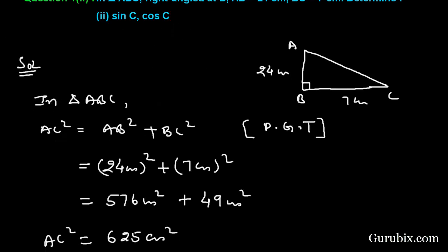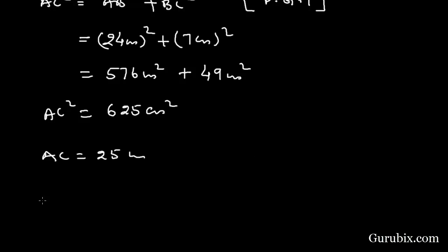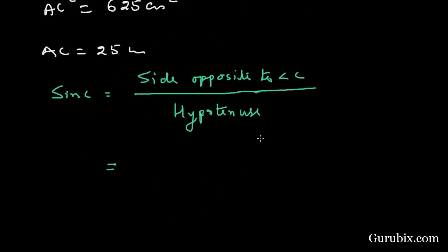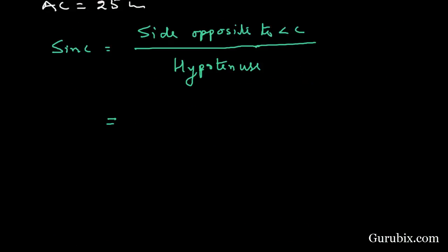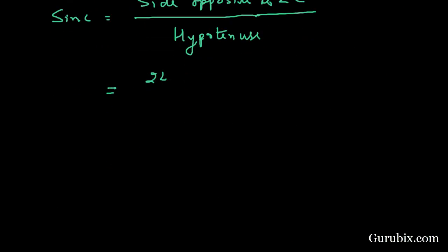Now we shall calculate sin C. It will be side opposite to angle C over hypotenuse. So here we have 24 cm over 25 cm, which equals 24 over 25.